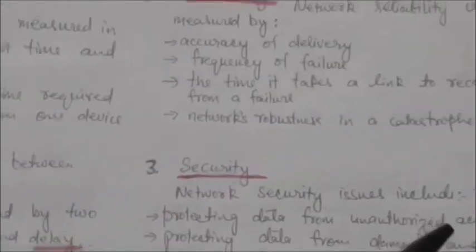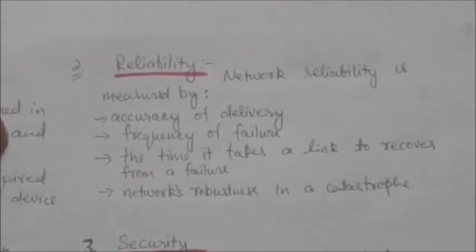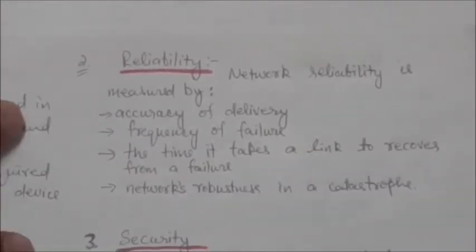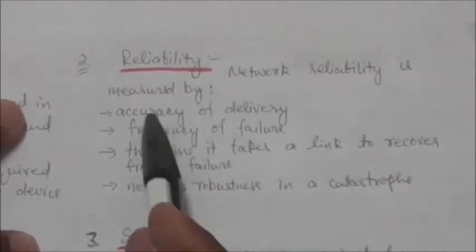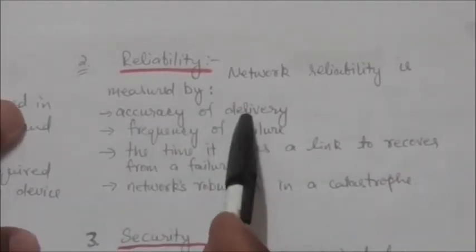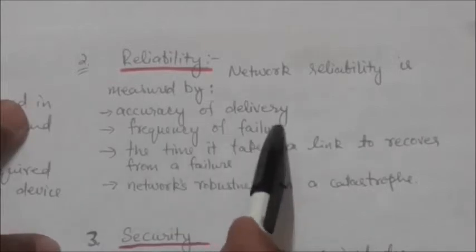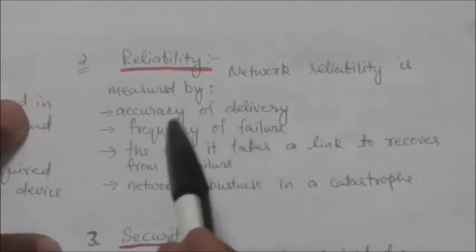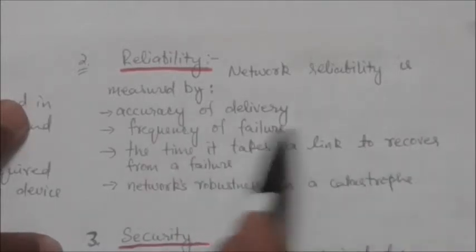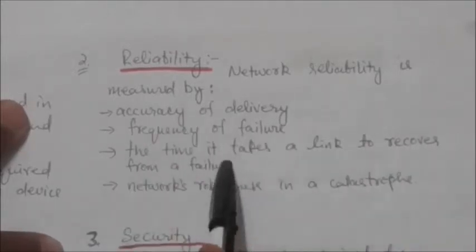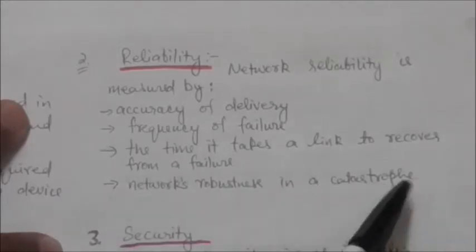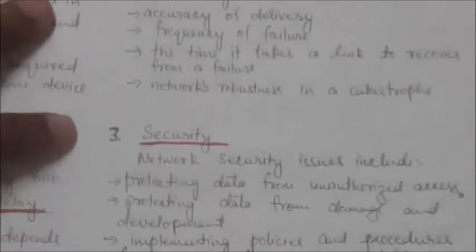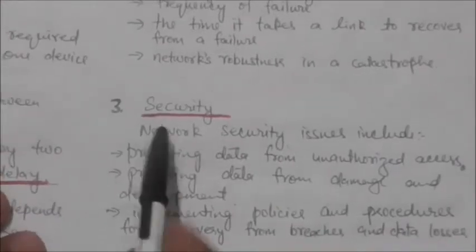The second criteria is reliability. Network reliability is measured by the accuracy of delivery, frequency of failure, the time it takes a link to recover from a failure, and the network's robustness in a catastrophe.